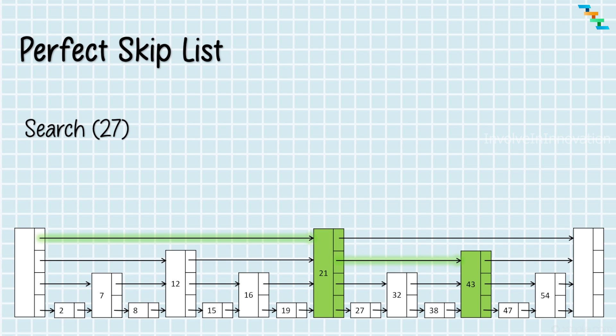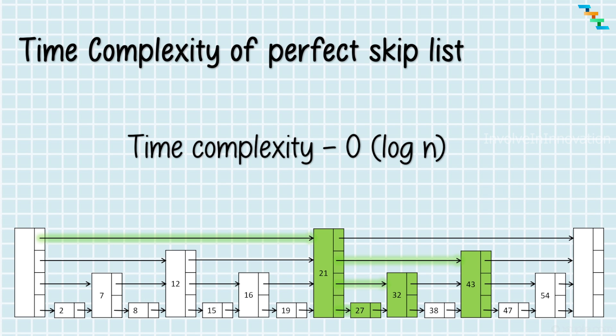We are using divide and conquer here, but making use of different layers — this is how divide and conquer works in a linked list. 43 is greater than 27, so we go one level below from node 21 and traverse to the next element, which is 32. 32 is greater than 27, so we go one level below and traverse to the next node from 21, which is 27. We found the number we were searching for. The time complexity for searching in a perfect skip list is O(log n).